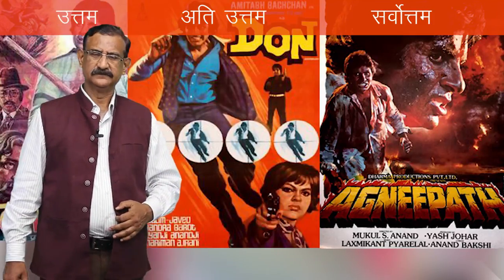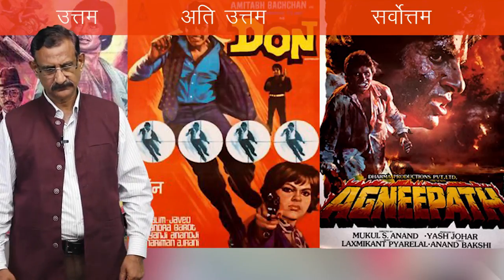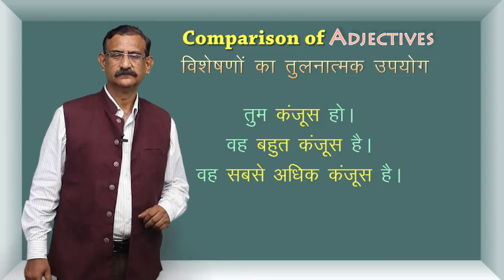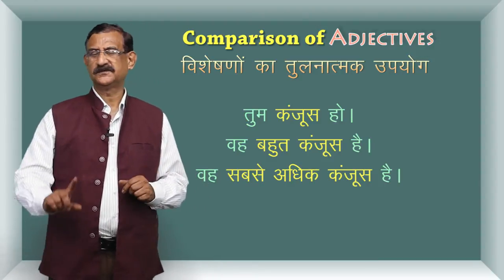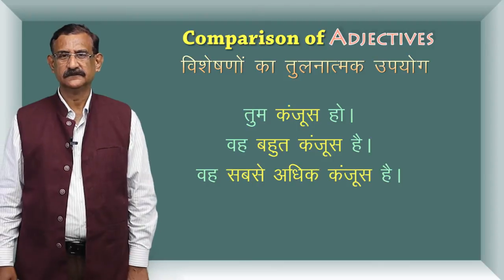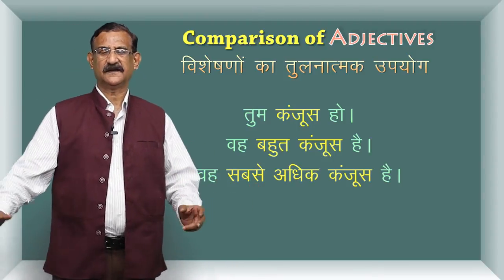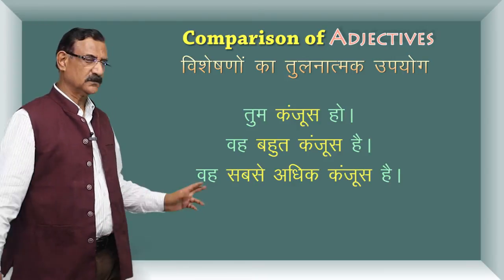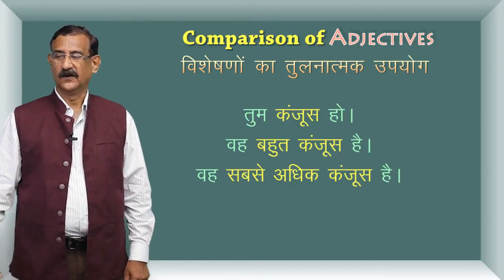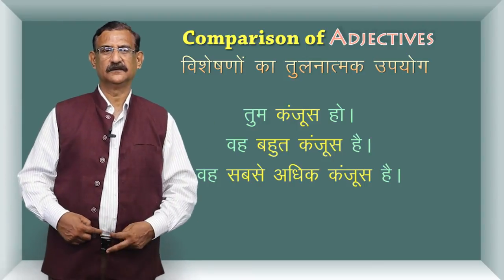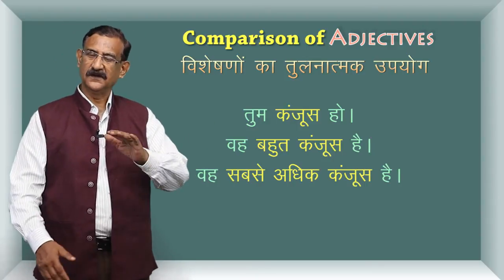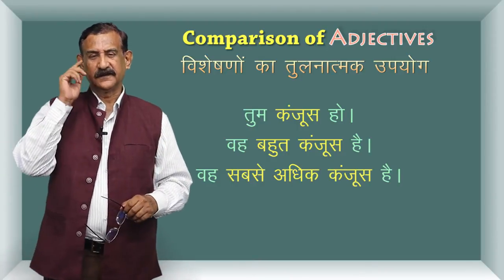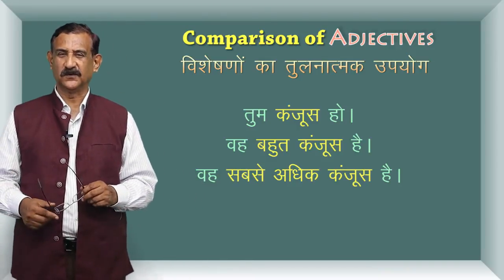Hem ek aur daran le, Hindi mein pehle — tum bahut kanjus ho. Woh usse se jyada kanjus hai. Or tisara — woh toh sabse jyada kanjus hai. Yeh teen star hua. Iske baad koi chautha star aapke khyal mein aata hai? Sabse jyada jo kanjus hai, iske baad koi aur star toh hoga nahi.